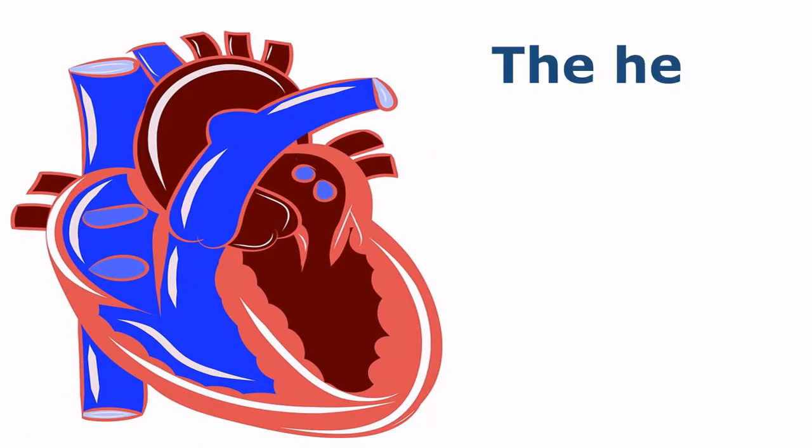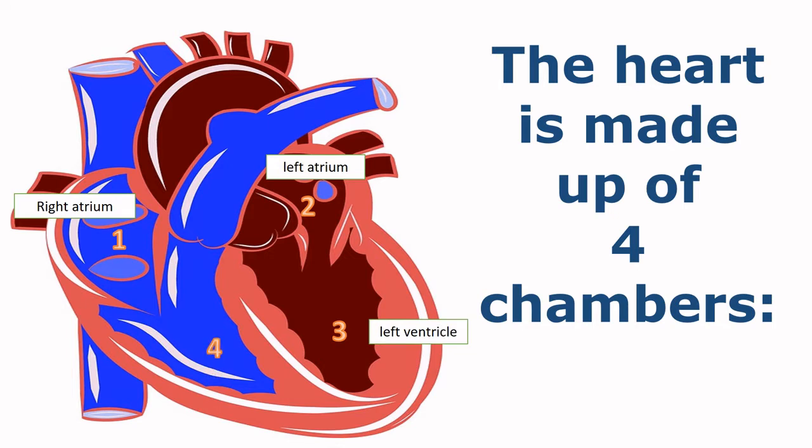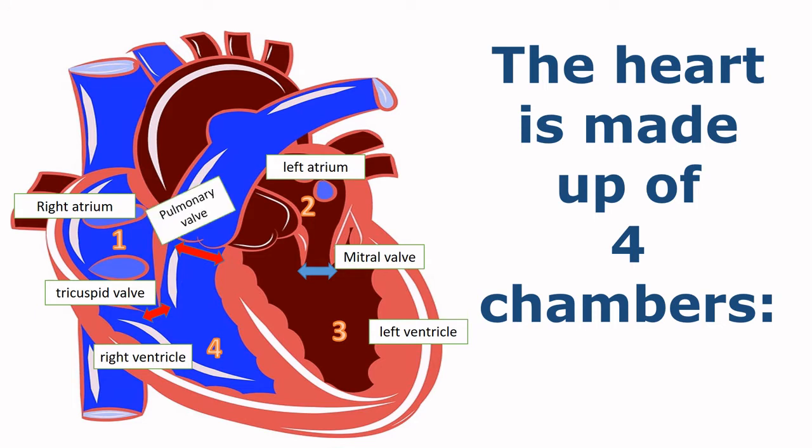So guys, the human heart is made up of four chambers. There is first right atrium, there is left atrium, there is left ventricle, then there is right ventricle. The left atrium is connected to the left ventricle by mitral valve or bicuspid valve. The right atrium is connected to the right ventricle by tricuspid valve. Then the right ventricle is connected to the pulmonary artery by pulmonary valve. Then the left ventricle is connected to the aorta by aortic valve.